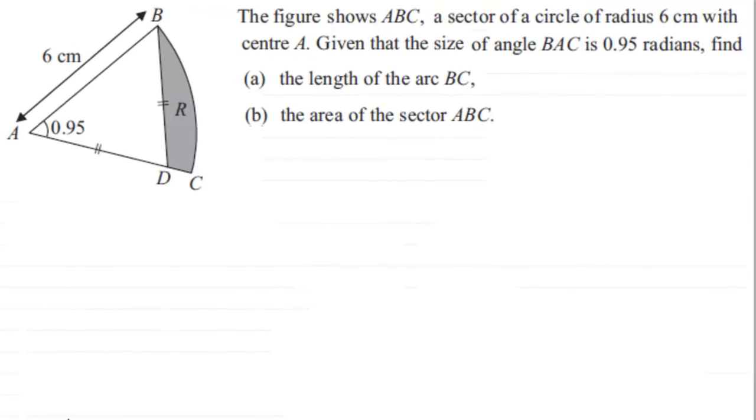Hi. Now in this example we're told that we've got this figure ABC which is a sector of a circle with radius 6 centimeters with center at A. And given that the size of angle BAC is 0.95 radians, we've got to find the length of the arc BC and the area of the sector ABC.